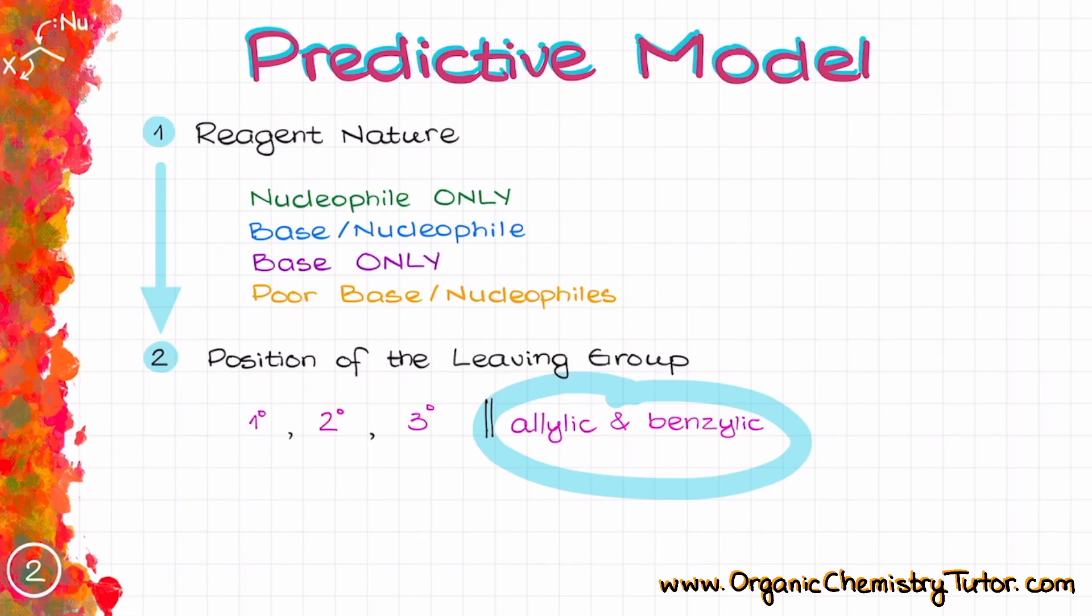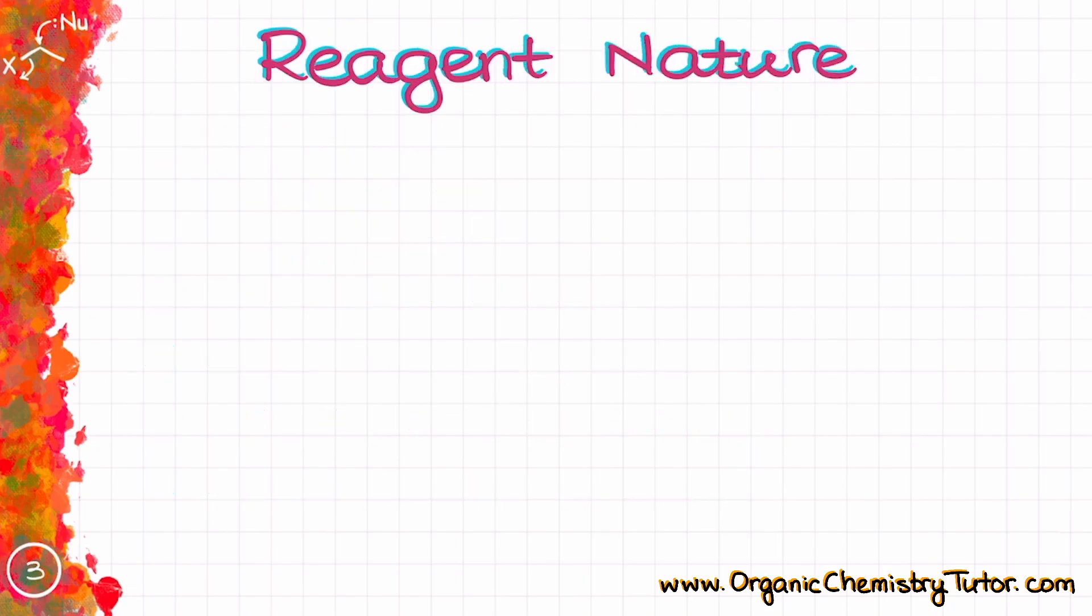Once we know all of that, we can determine the mechanism by plugging the pieces into the model and see if we fit any exceptions or special criteria that we might have. We don't really have too many of those special cases. So now, when we know the basic outline of the model, let's talk about those categories in a few more details starting with the nature of our reagents.